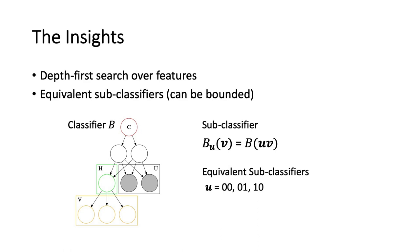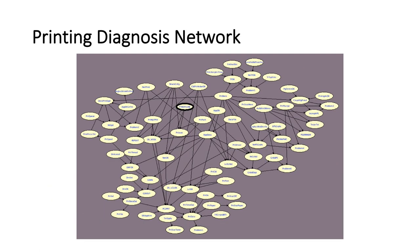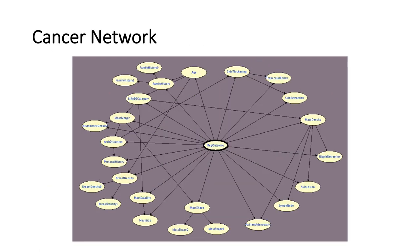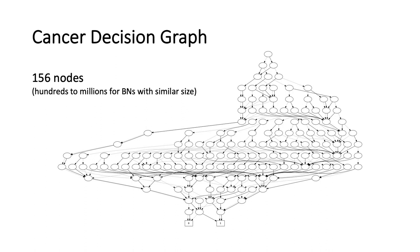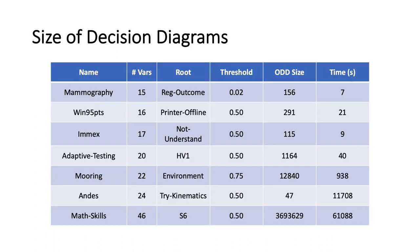We applied this algorithm to a variety of classifiers in the literature - examples from educational testing, diagnosis, and medical diagnosis including breast cancer. One thing we found is the sizes of the obtained decision graphs can vary substantially even for networks of similar size. For one particular classifier, the decision graph was only 156 nodes, and we're seeing all of it on this slide. Other data shows sizes ranging from a couple hundred nodes all the way to millions.